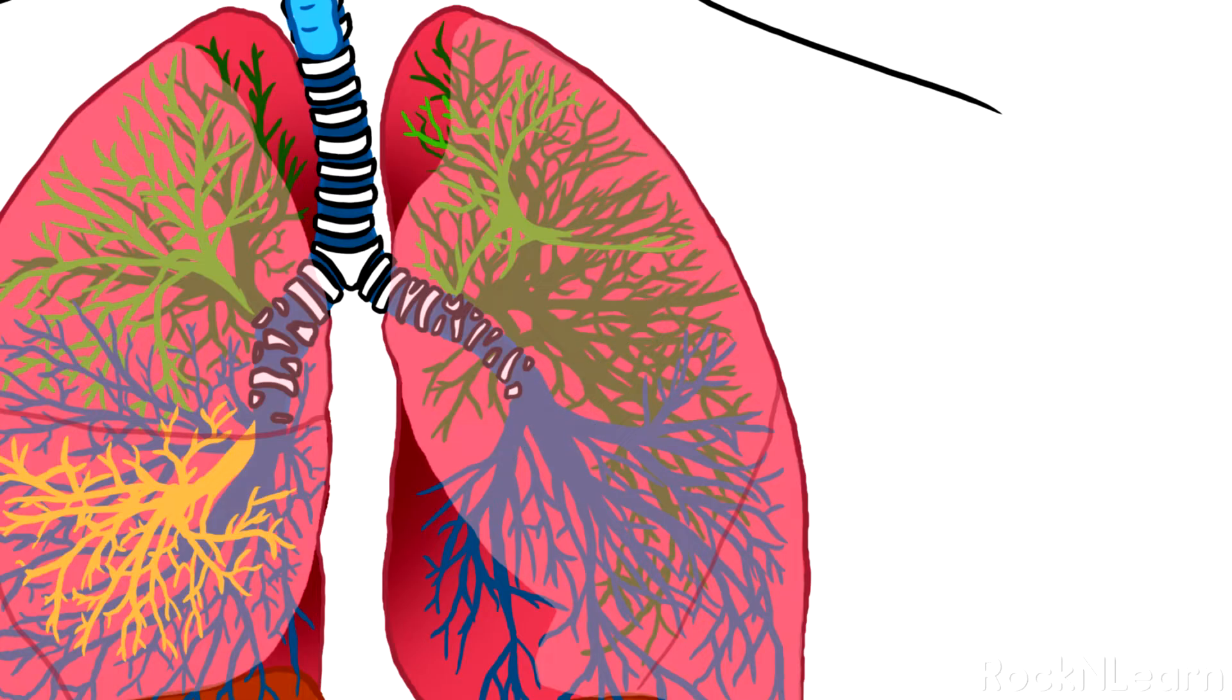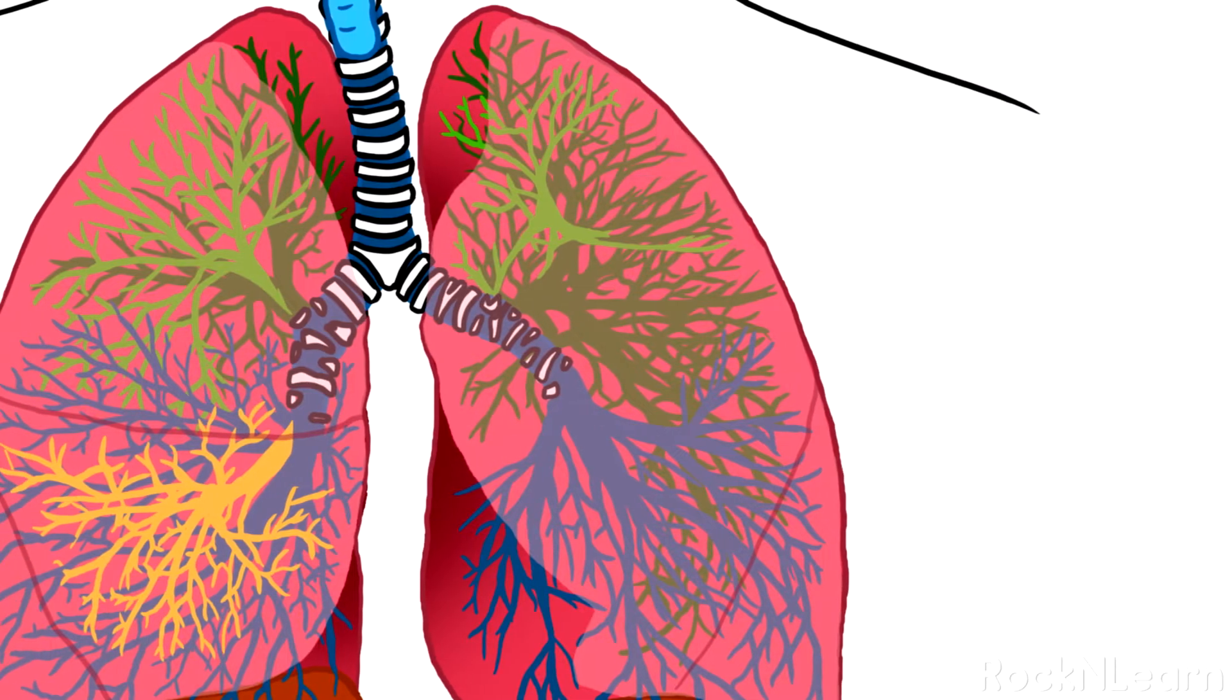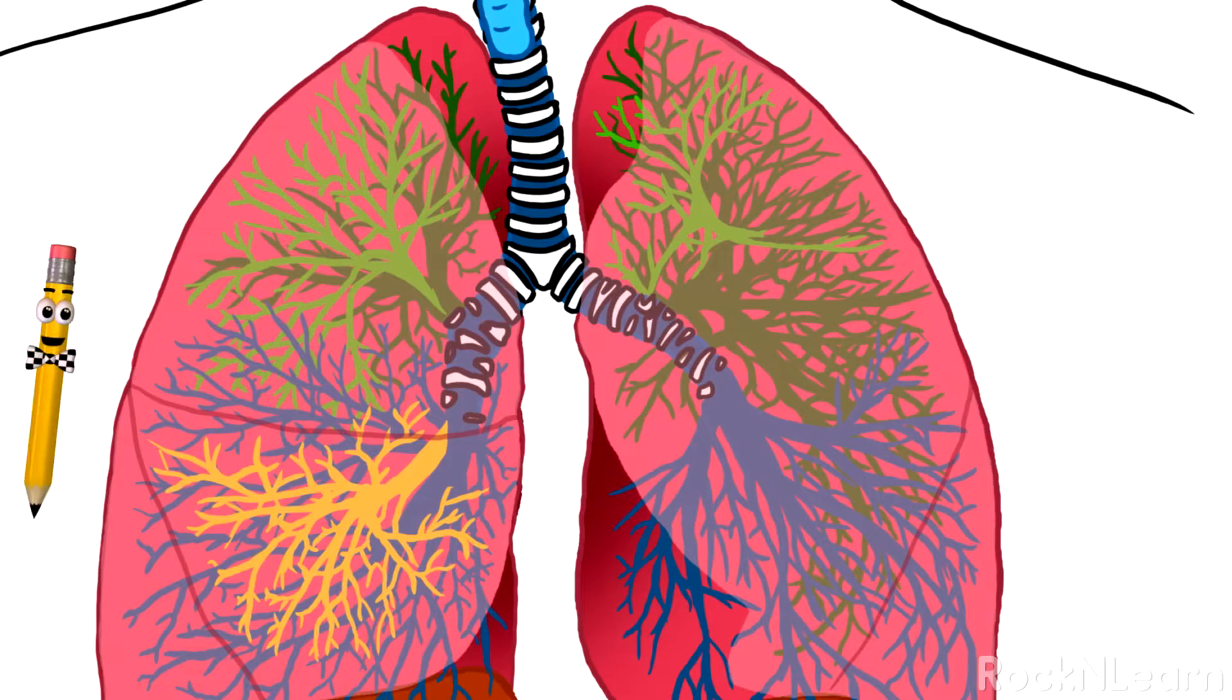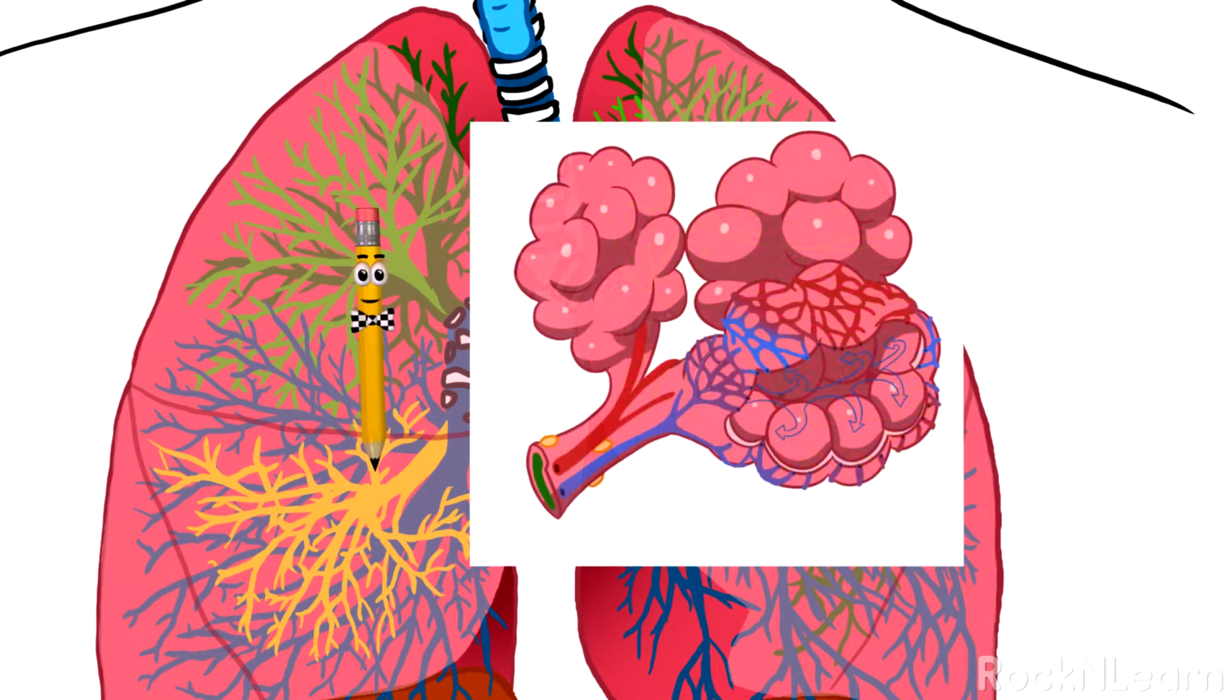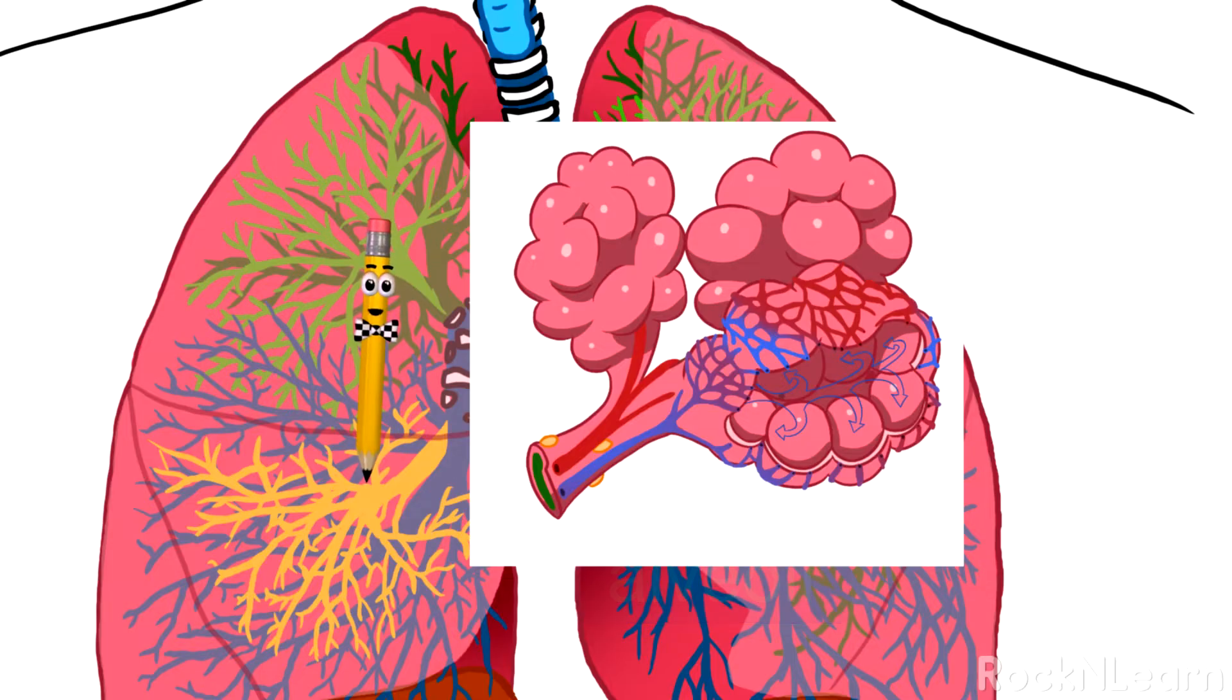The tiniest tubes are called bronchioles, and there are about 30,000 of them in each lung. Each bronchiole is about the same thickness as a hair. At the end of each bronchiole is a special area that leads into clumps of tiny air sacs called alveoli. There are about 500 million alveoli in your lungs. Each alveolus has a net-like covering of small blood vessels called capillaries.